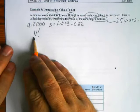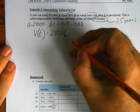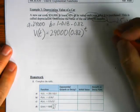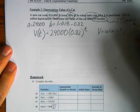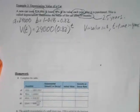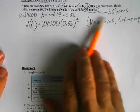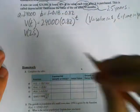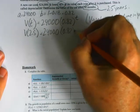Our equation is V(T) equals 24,000 times 0.82 to the power T, where V is value in dollars and T is time in years. The question asks about 30 months, but our equation works in years, so we convert: 30 divided by 12 equals 2.5 years. If you mistakenly plugged in 30, you'd be finding the value after 30 years, which would be almost nothing. So we plug in T equals 2.5, giving V equals 24,000 times 0.82 to the power 2.5.